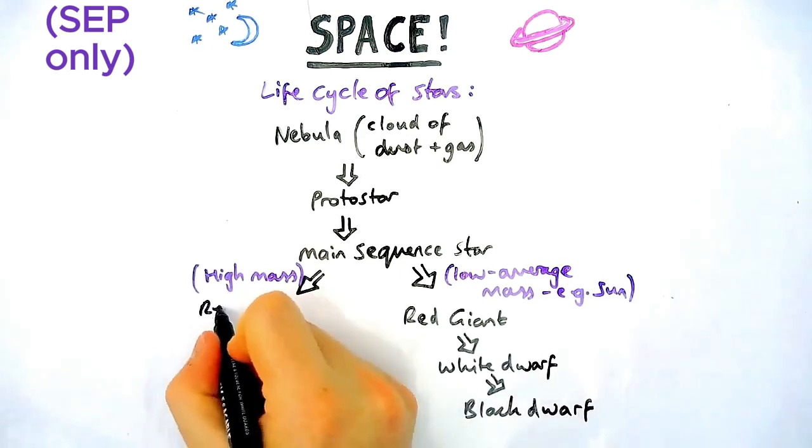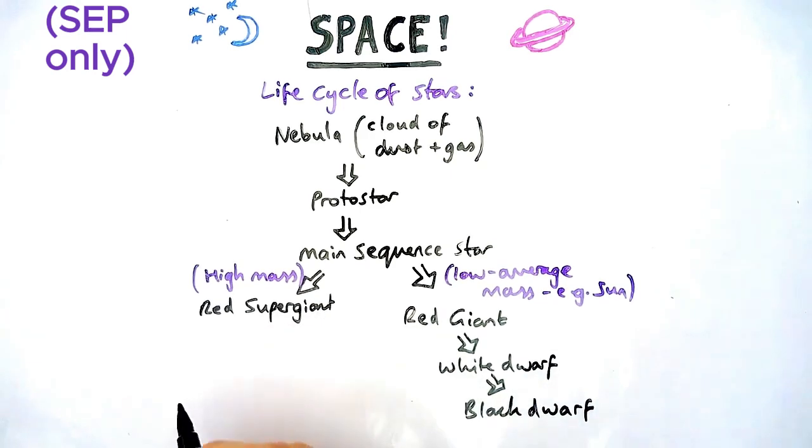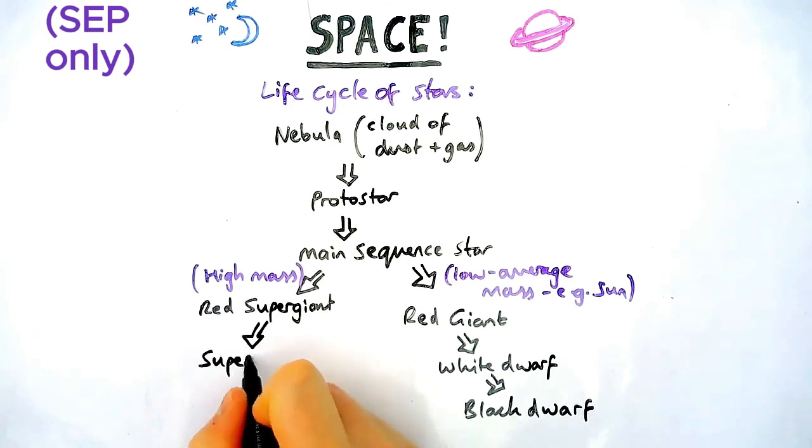Now for high mass stars, it's slightly different. Instead of a giant, they are a red supergiant star. And after that stage, you have what's called a supernova. After that stage, you go into two different sections called either a black hole or it forms a neutron star.